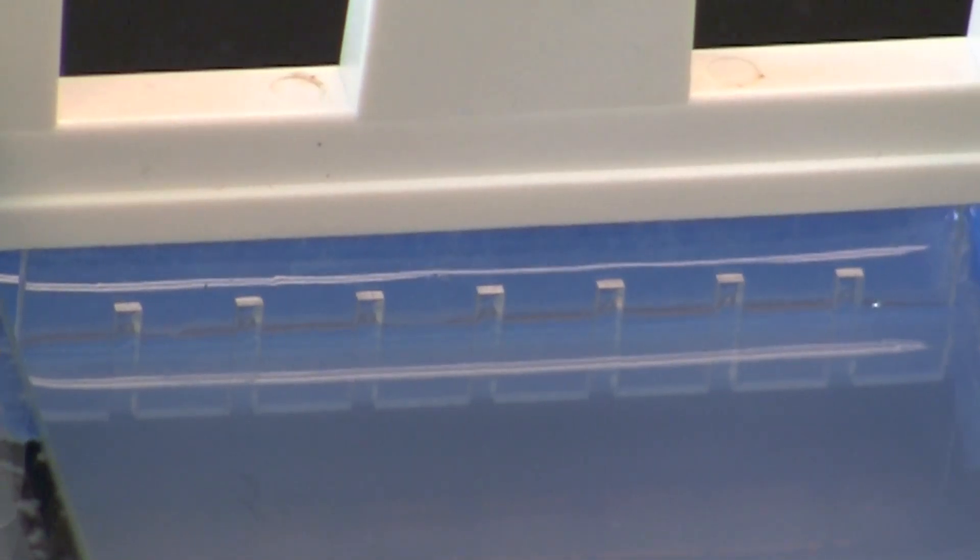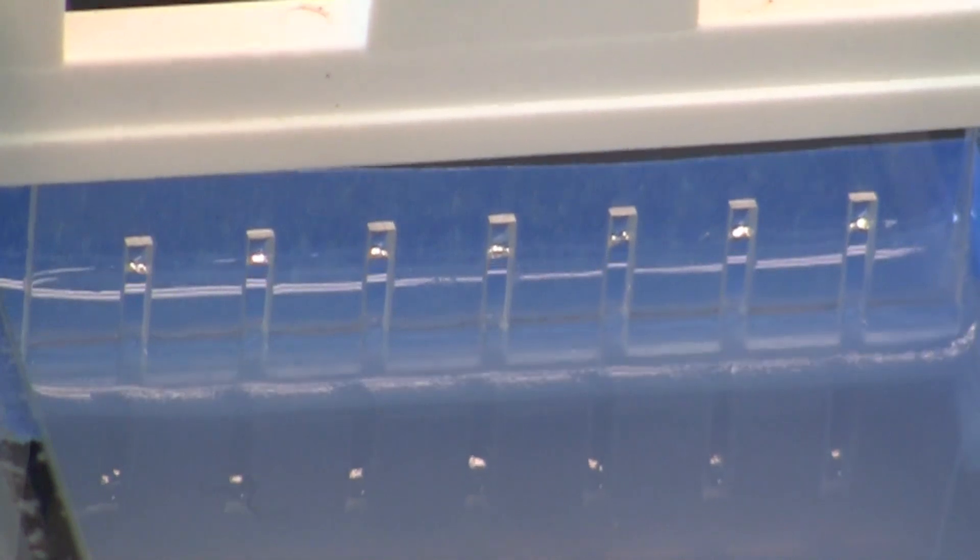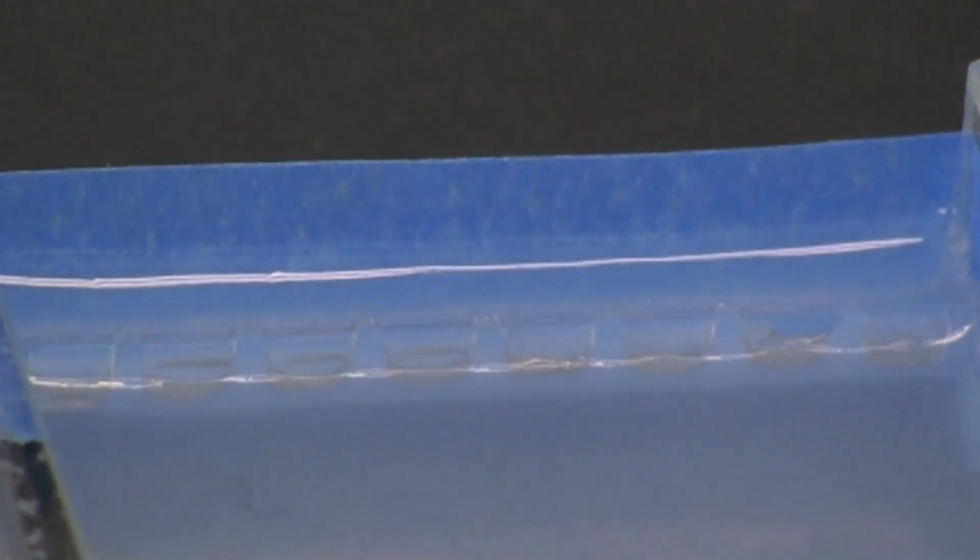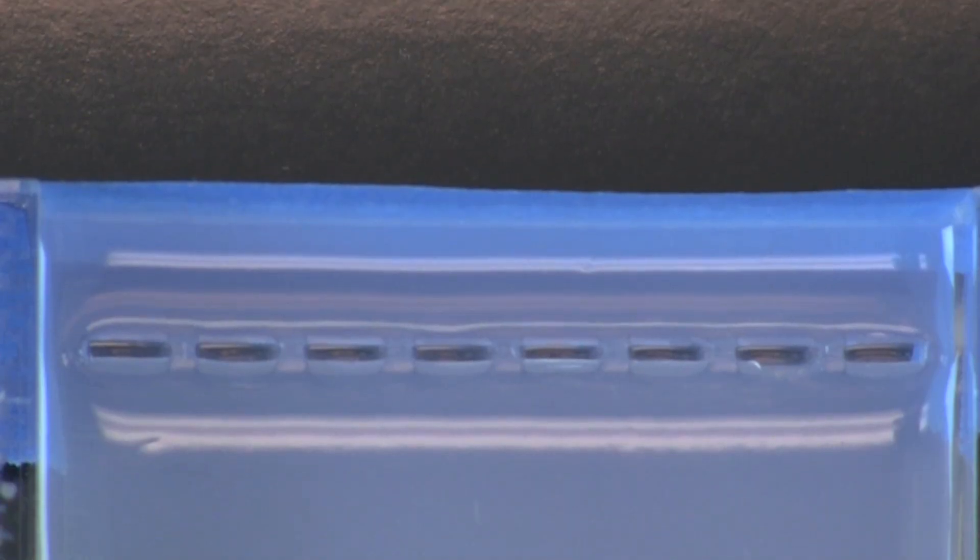When the gel is cool and opaque, remove the comb by pulling it gently straight up and out of the wells. You should be able to see that each well is well formed. If the comb is removed before the gel is set, the wells will collapse.